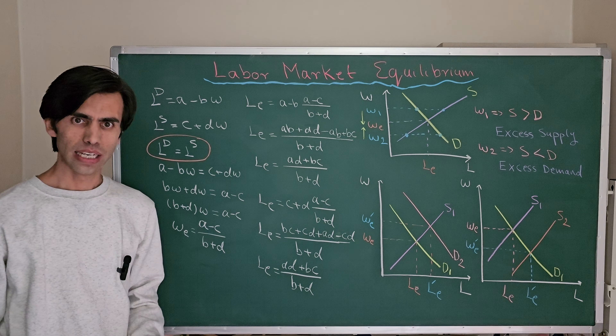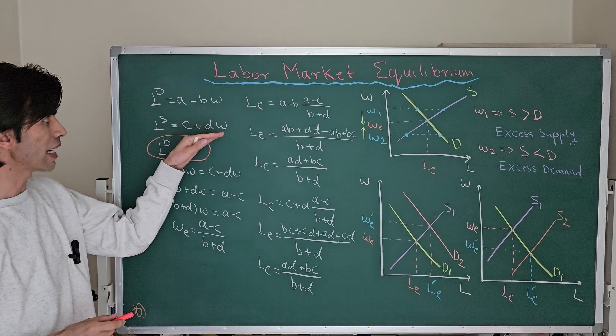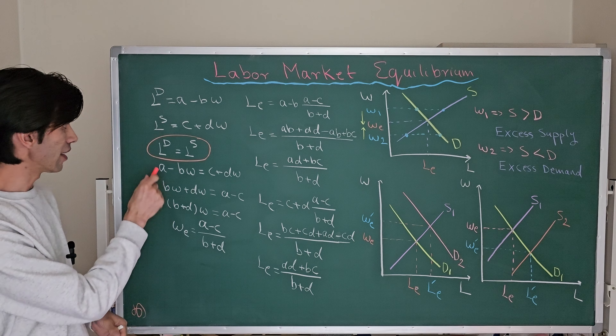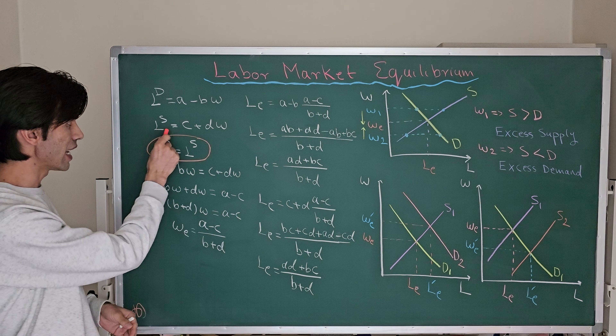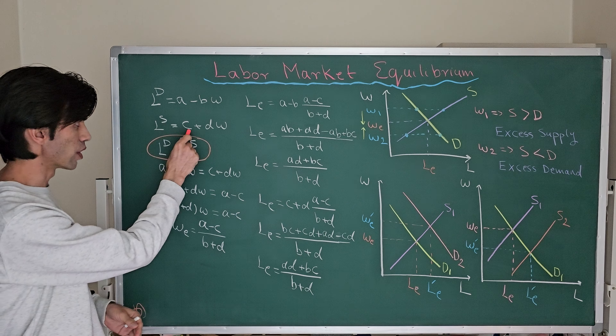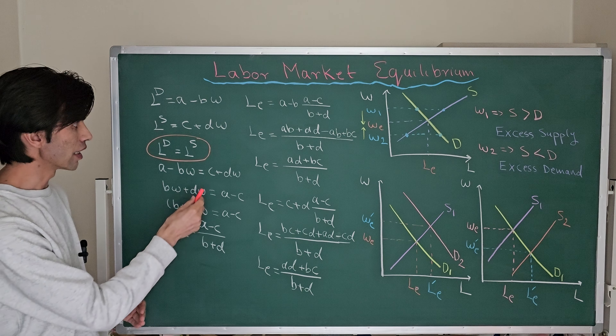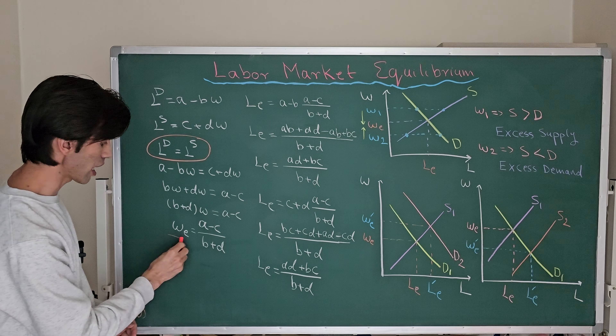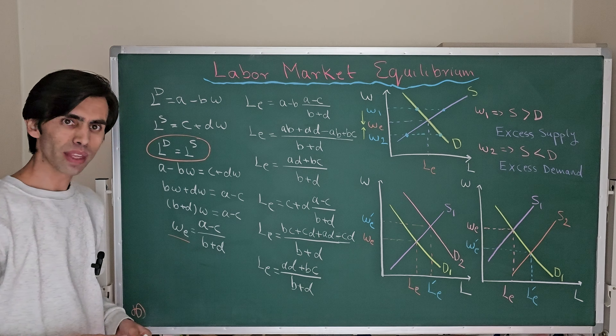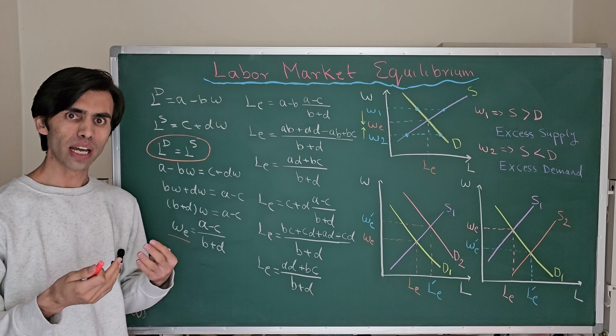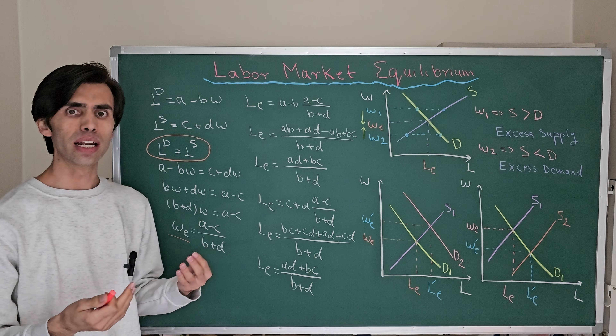Suppose our labor demand equation is LD = A − BW and the labor supply equation is LS = C + DW. The first step is to find the market clearing wage, W_E. The market clearing wage is the wage rate at which labor supply equals labor demand.